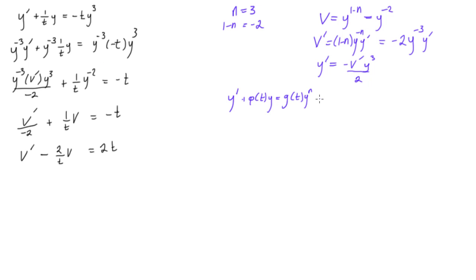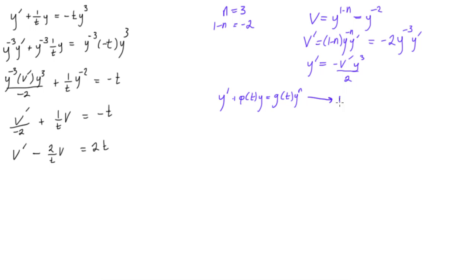After all of this, what we said is we can rewrite this in terms of v as v prime plus 1 minus n times p of t, the original p of t times v is equal to 1 minus n g of t.